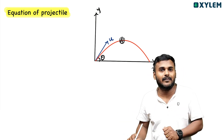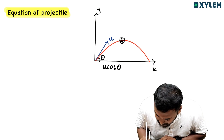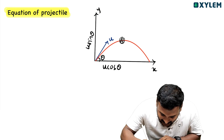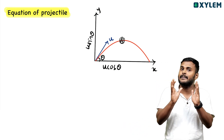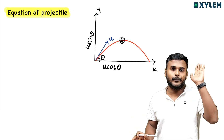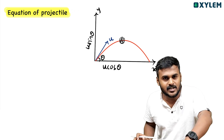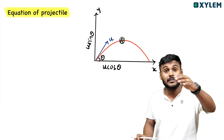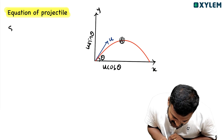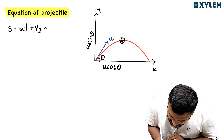U is the velocity component. There are two terms: U cosθ is the horizontal component, and U sinθ is the vertical component. I will tell you the concept of the equation. The method uses S equals ut plus half at squared.